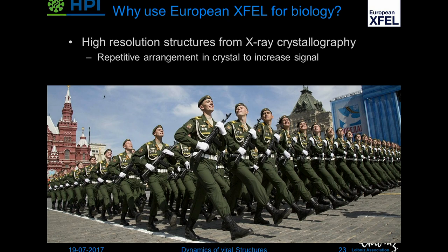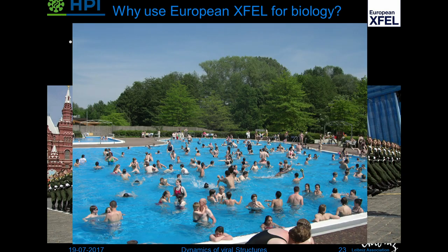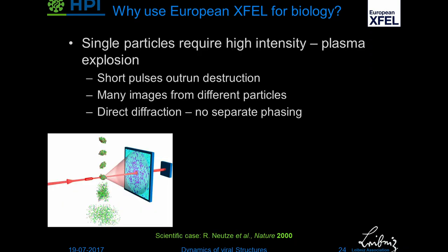Why would you want to do biology at a free electron laser rather than go to a synchrotron? Most high-resolution structures usually come from X-ray crystallography, where you have your proteins nicely ordered to amplify your signal from the repetitive structure. But in my view proteins are more like this — they all take up different conformations and don't like to be packed in crystals. That especially holds for my viral intermediates.